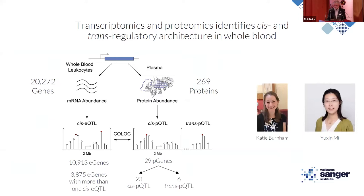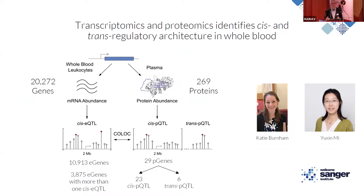Starting with the eQTL, this work was led by Katie Burnham at the Wellcome Sanger Institute. We took the 20,000 expressed genes detected and tested for cis-eQTL in a one megabase window around the transcription start site. We identified that around half of the genes have an eQTL, and of those, around 40% have more than one eQTL based on a forward regression approach.